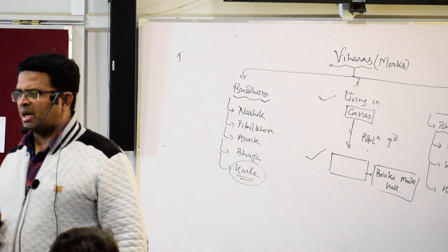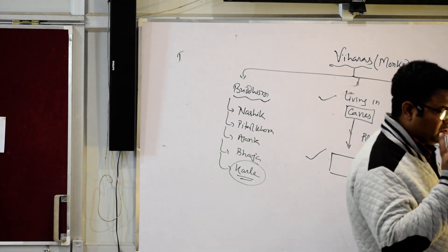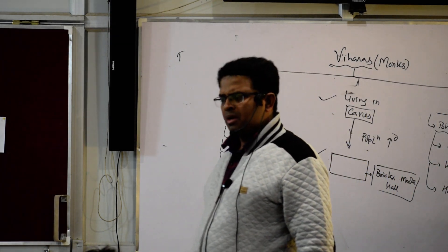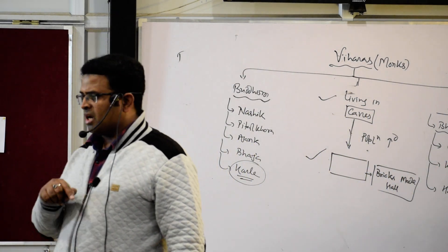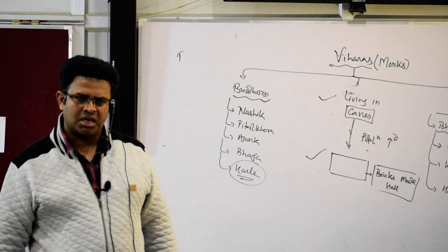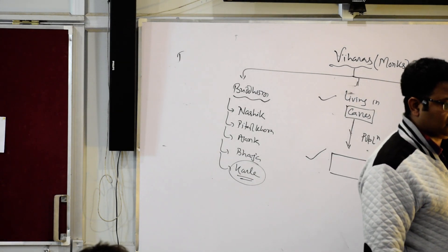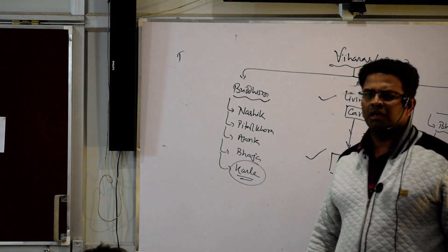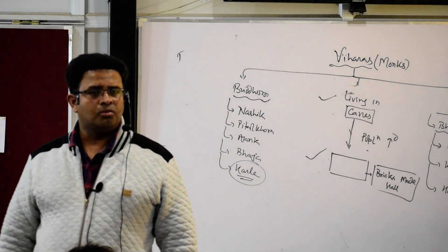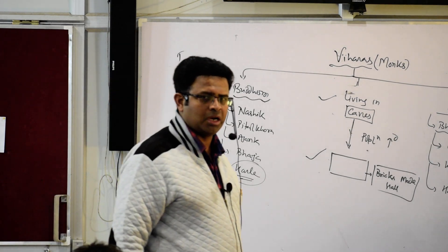I talked about viharas - there are viharas related to Buddhism and Jainism. Buddhism-related ones include Nashik, Ajanta, Bhaja, and Karle. Jainism-related ones are in Bhubaneswar, nearby in Kordha district - Udayagiri, Khandagiri, and Hathi Gufa. Can you remember?